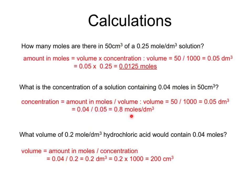Finally, what volume of a 0.2 mol/dm³ hydrochloric acid solution would contain 0.04 moles? Both values are in correct units, so volume = moles ÷ concentration = 0.04 ÷ 0.2 = 0.2 dm³. Converting to cm³ by multiplying by 1000 gives 200 cm³.